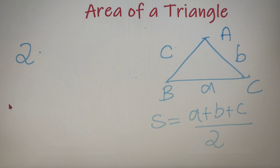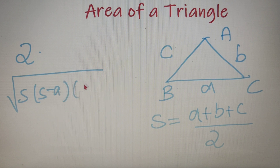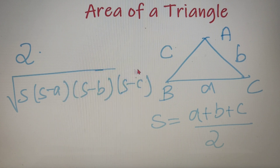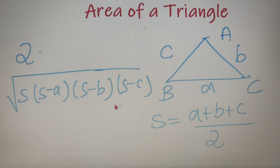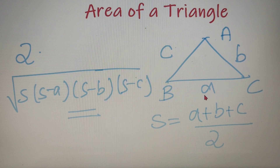So according to Heron's formula, the area of the triangle is equal to the square root of S into (S minus A) into (S minus B) into (S minus C), where all four parts are under the root. So this formula — the square root of S(S−A)(S−B)(S−C) — is Heron's formula, and this method is used for calculating the area of a triangle when all the sides are given.